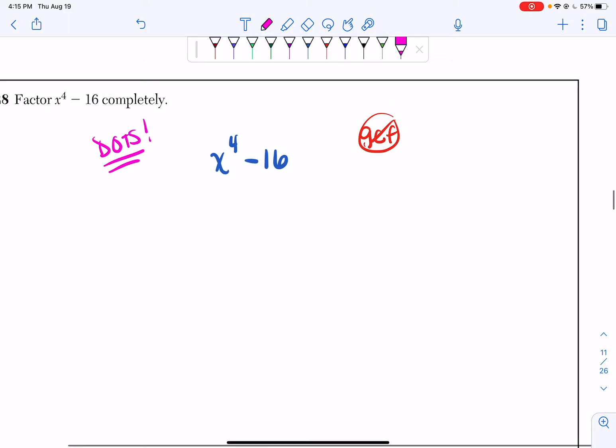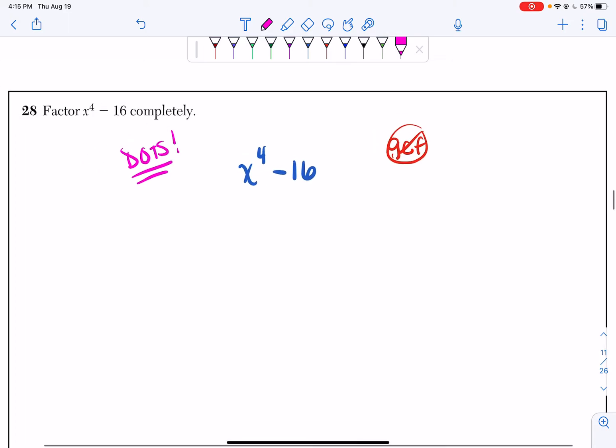So when we use difference of two squares factoring, we basically want to find out the term that will multiply by itself to make the terms that we're starting with. So the first thing I'm gonna do is I'm gonna make two sets of parentheses, because whenever we do difference of two squares factoring, we're gonna have two sets of parentheses. And I'm gonna ask myself how do I break apart an x to the fourth? Well I simply just take my 4 and I divide it by 2 and I get x squared in both sets of parentheses.